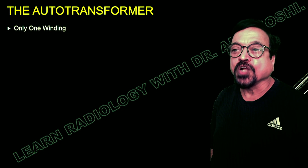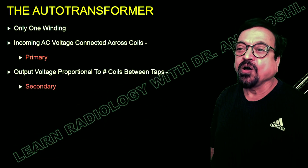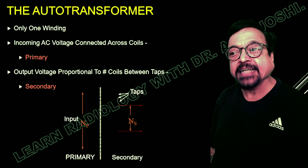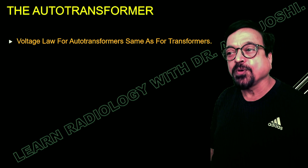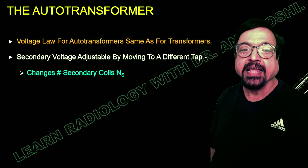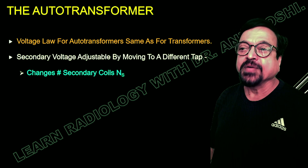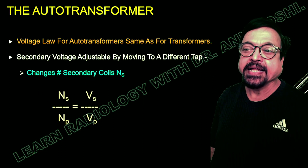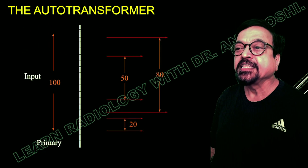This flux links with all the turns forming the coil, inducing voltage into the secondary turns. In an auto transformer there is only one winding, with the incoming AC voltage connected across the coils as the primary. The output voltage is proportional to the coils between the taps, which give different voltage levels acting as the secondary. The voltage law for an auto transformer is the same as for other transformers; secondary voltage is adjustable by moving to a different tap — a sliding tap is provided. You can see the adjustable taps when examining the machine.